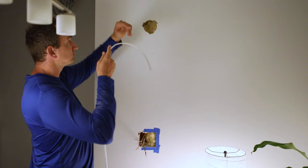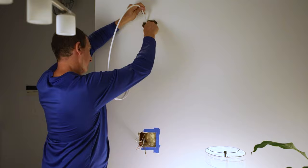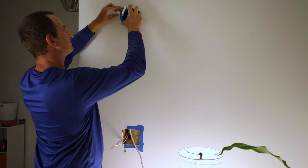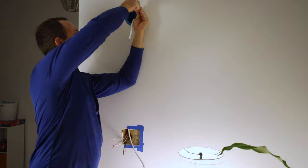I start by feeding a 14 gauge Romex down through the light hole into the switch hole. Now I can install my light mounting box by threading the Romex wire through, sticking the box in the wall, and then screwing it into place.